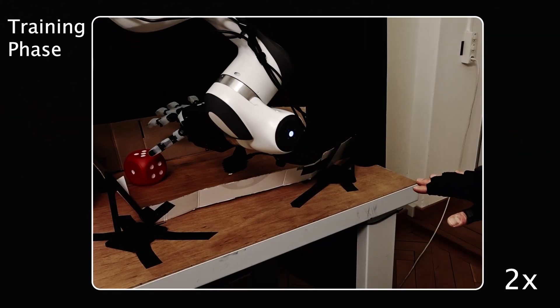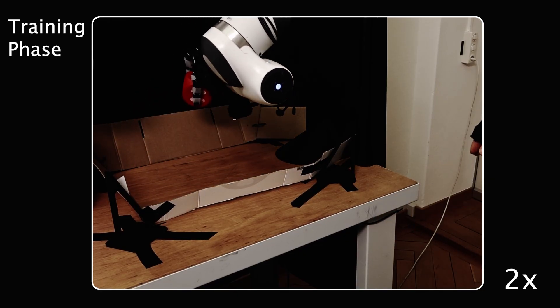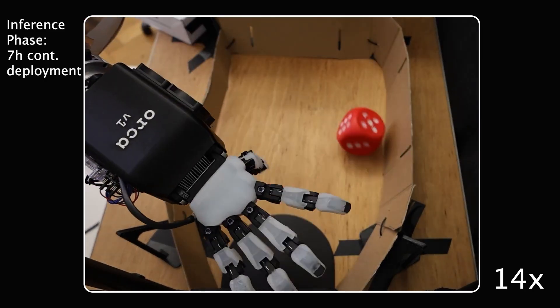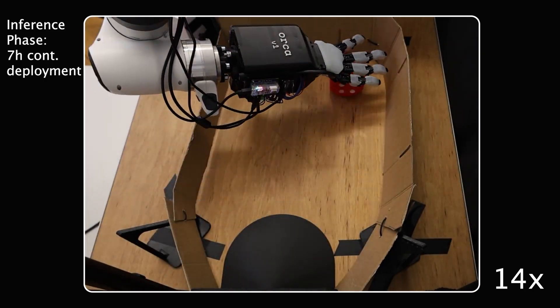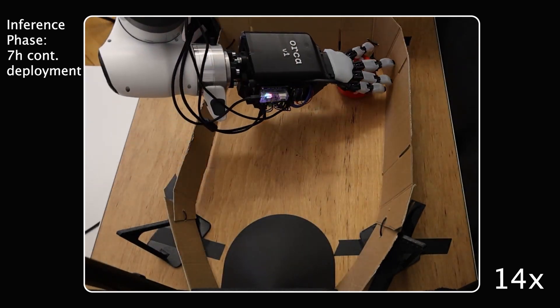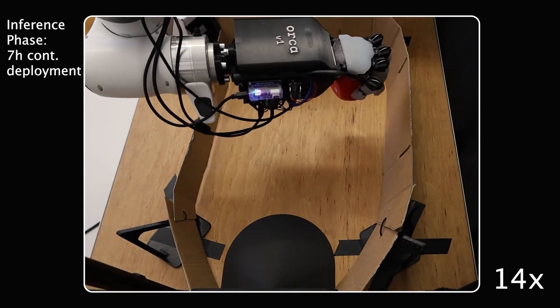To further the autonomy of the Orca hand beyond teleoperation, we designed a continuous pick-and-place evaluation task. The experiment requires the hand, which is now equipped with a camera, to pick up a cube and drop it onto a sloped surface. From there it can roll into a new random position, and the experiment can repeat itself.